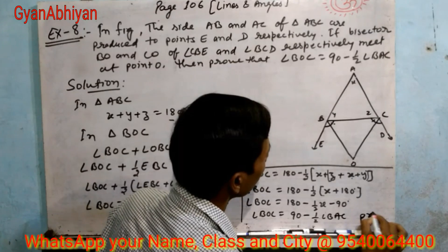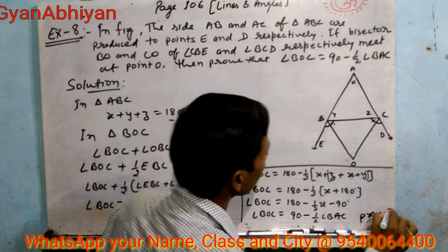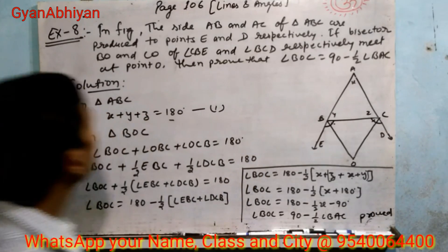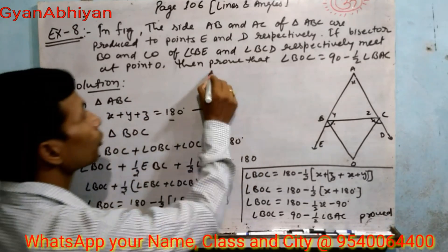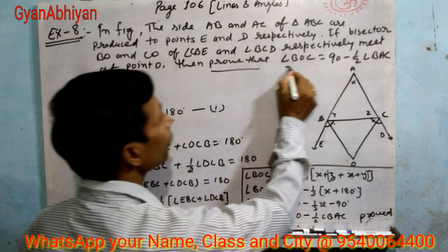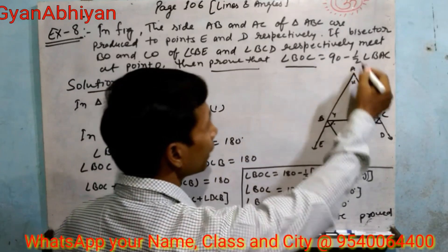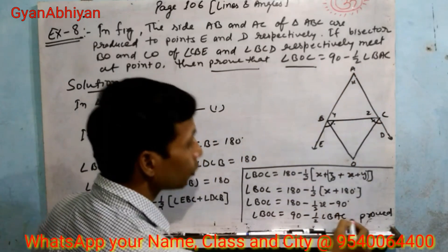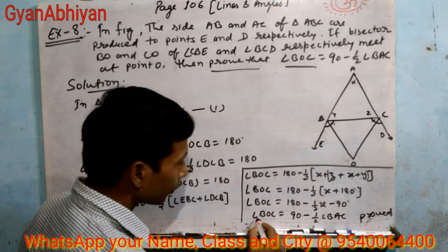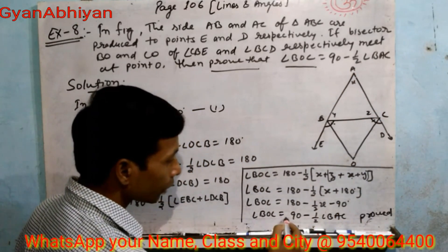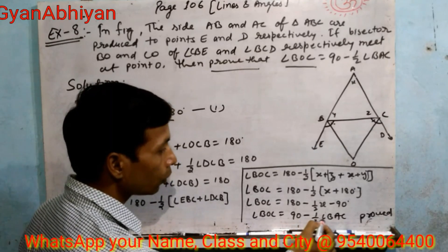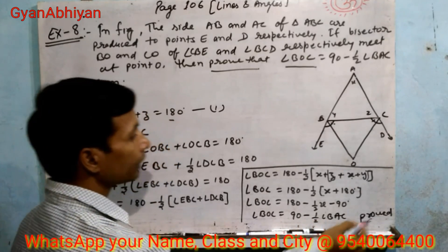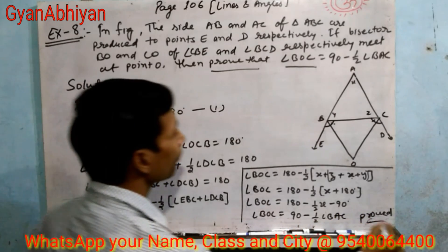तो angle BOC equal to 90 minus 1/2 angle BAC. यही हमें prove करना था। Hence proved: angle BOC equal to 90 minus 1/2 angle BAC. ठीक है।